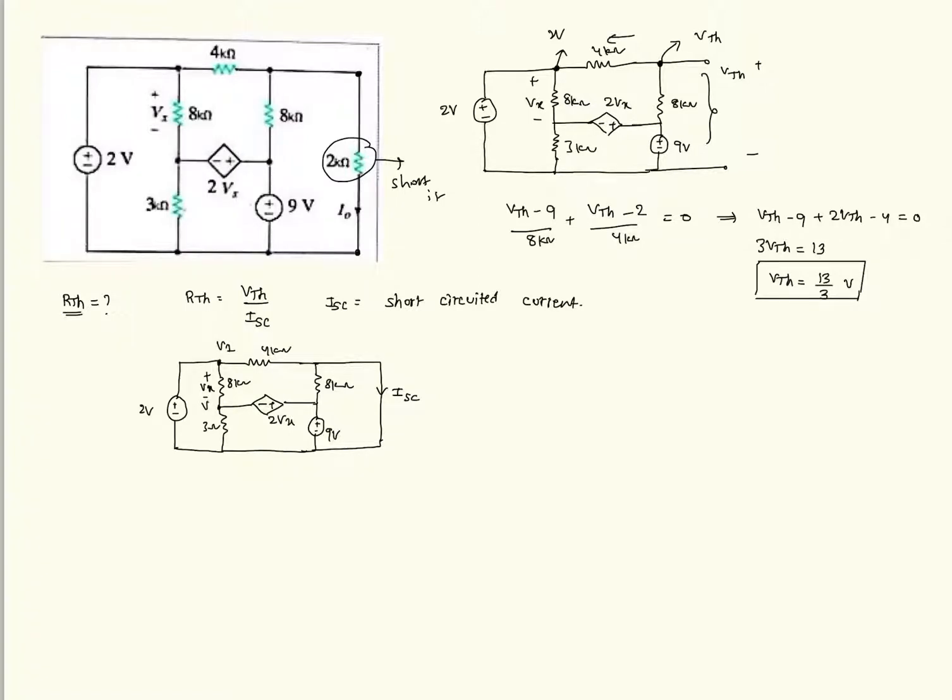Let us mark the node voltages. This is V1, V2, V3. Clearly V1 is equals to 2 volts. V1 minus V2 is Vx. And V3 minus V2 is 2 Vx. And V3 is 9 volts. This is V3. All these voltages are with respect to this ground.